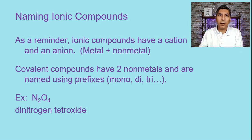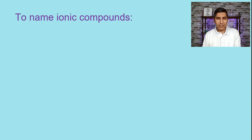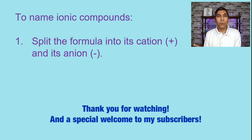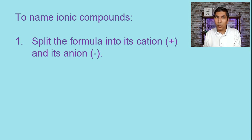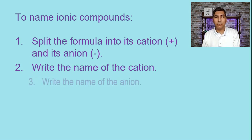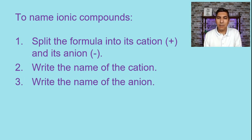In this video we're focusing on ionic compounds. To write the formulas of ionic compounds in the last video we had several steps, but in this process there are fewer — basically just three steps. The first is to split the formula into its cation and anion parts. The second step is to write the name of the cation, and the last step is to write the name of the anion.